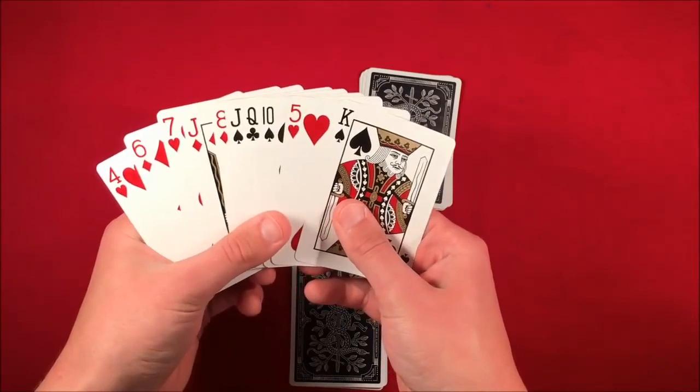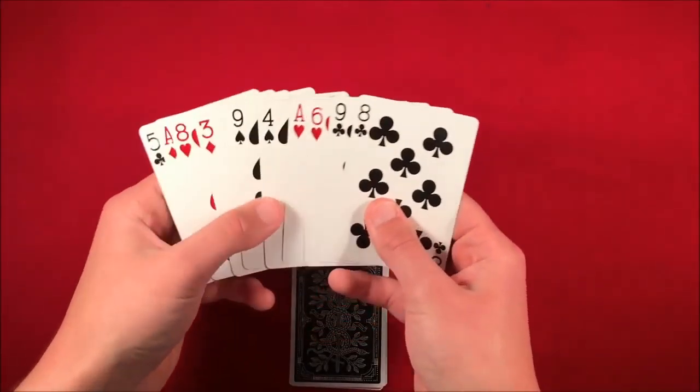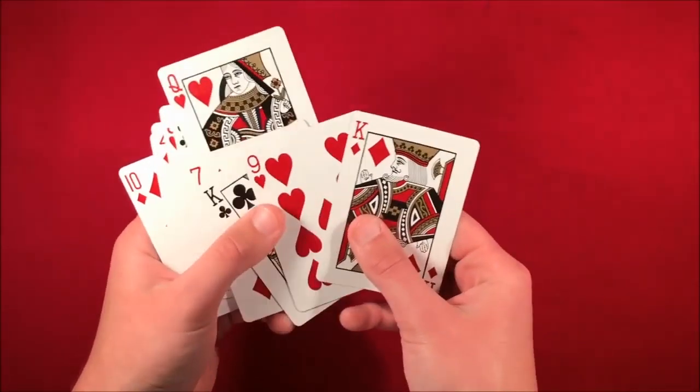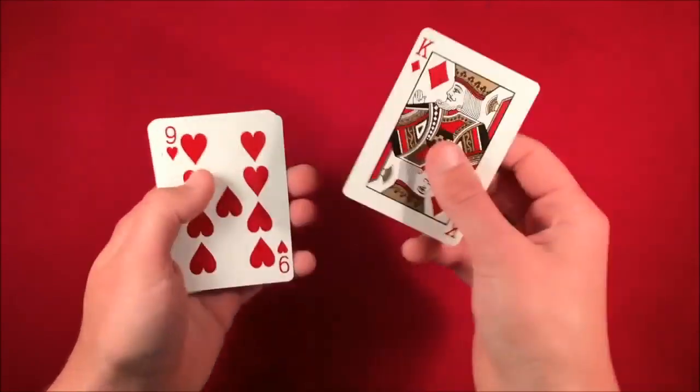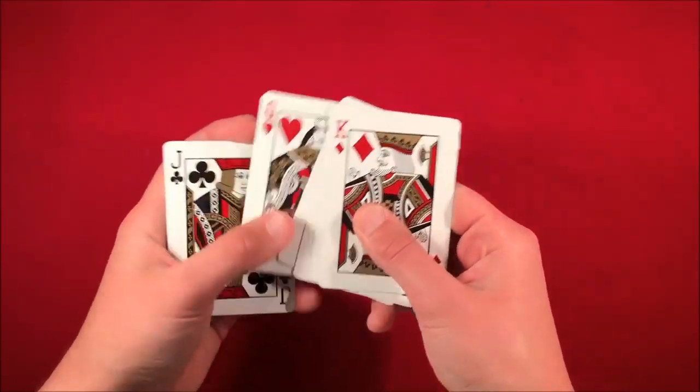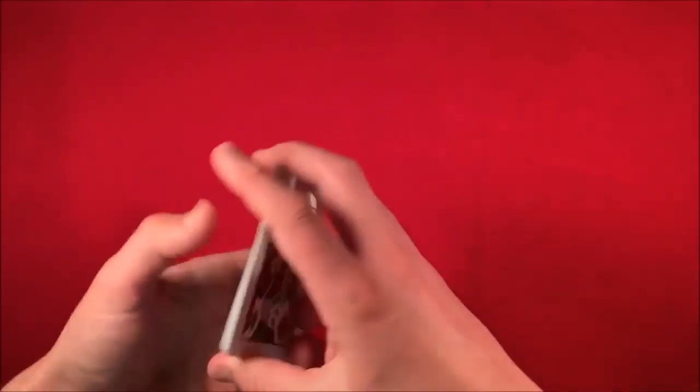It should be, so it has to be in this last packet here. So okay, so we see the spectator's card and like I said before it is five cards up from the bottom. So one, two, three, four, it's the fifth card from the bottom right here, the queen of hearts.